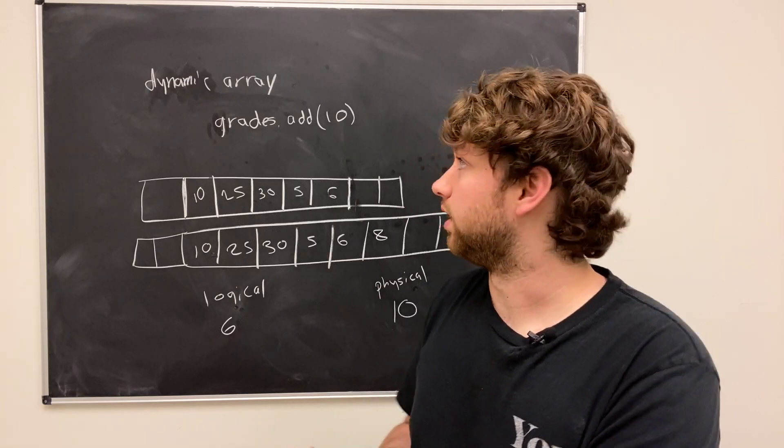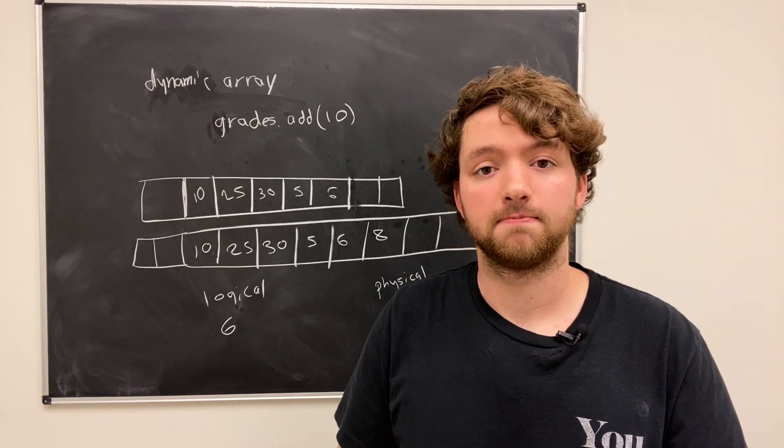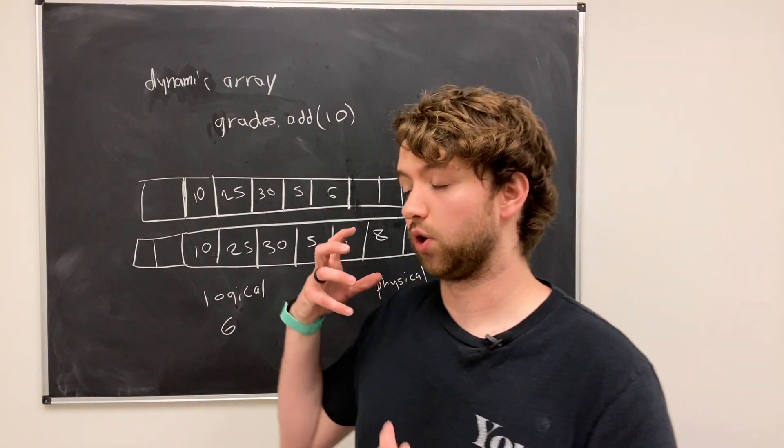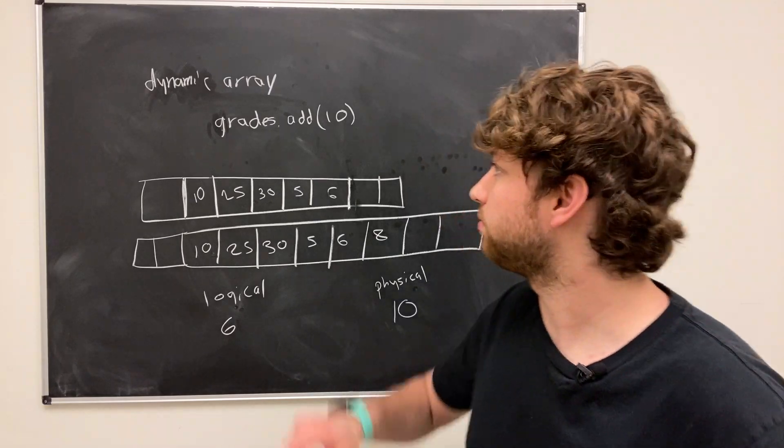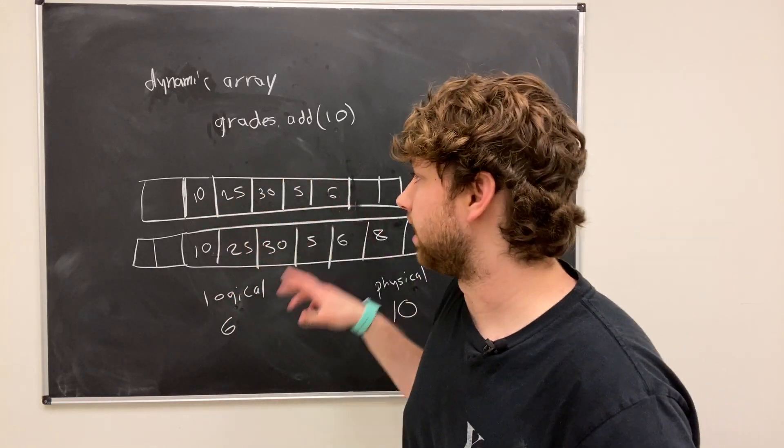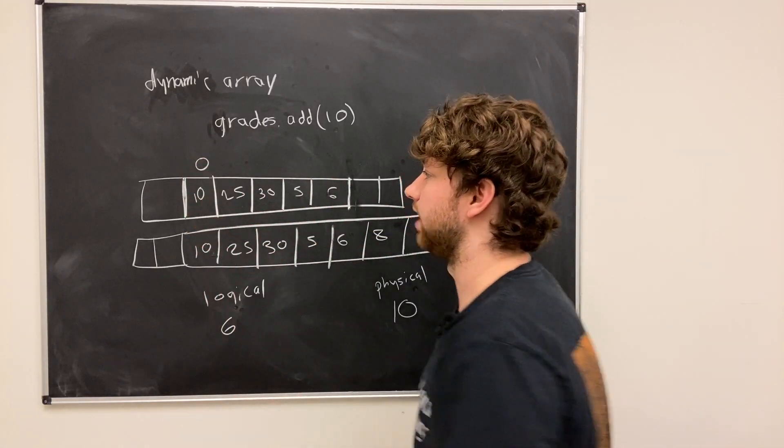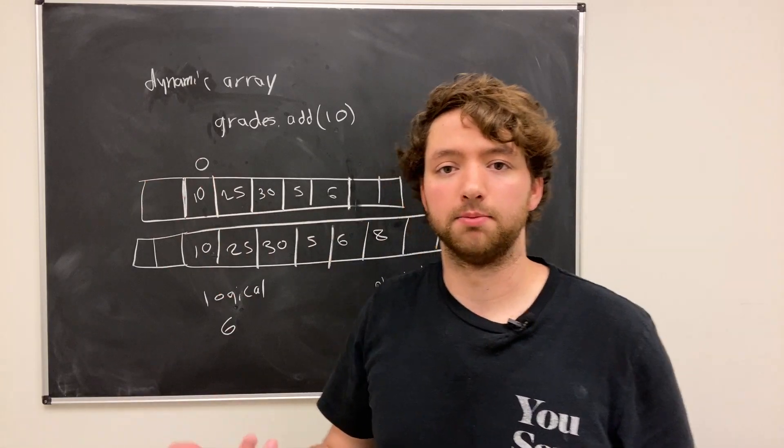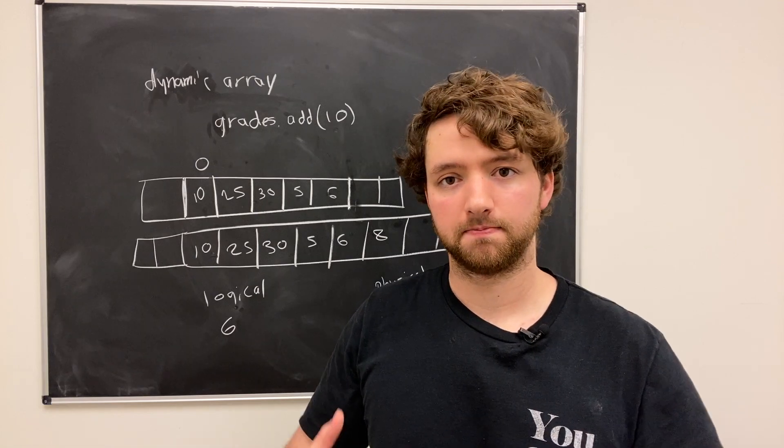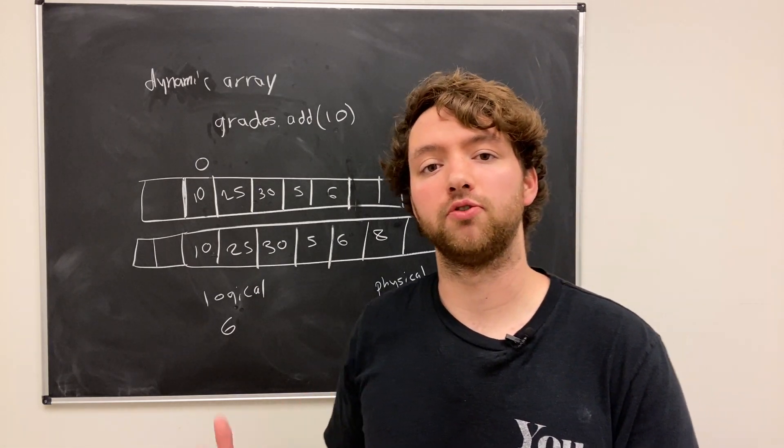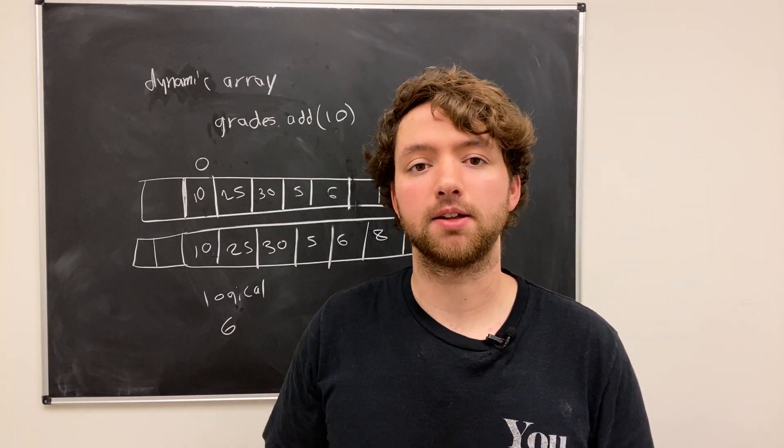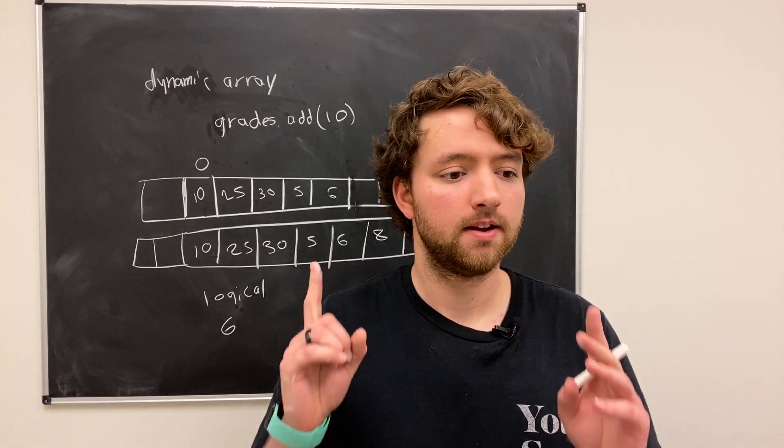Now, the other one that we want to talk about is a linked list. And this works a little bit differently. The actual interface for working with the linked list might be the same. You know, you still might be able to say .add or .append. You still might be able to get things by index. So you might be able to say, hey, grab the thing with the index zero and grab that element. But structurally and the performance is different. So it's structurally different and it performs differently. So let's talk about what a linked list might look like.